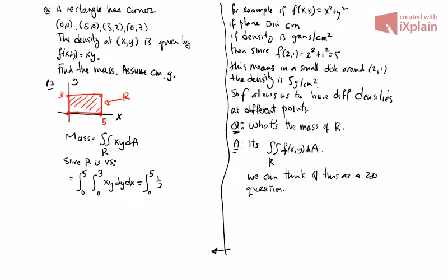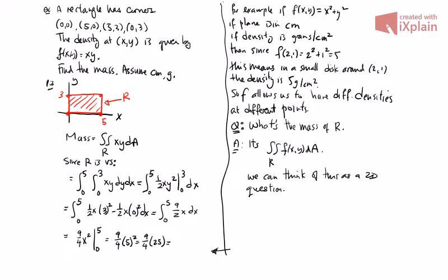0 to 5, integrate with respect to y. Plug in for y, get one half x times 3 squared minus one half x times 0 squared. This is 9 over 2x. Integrate with respect to x, we get 9 fourth x squared. This is 9 fourth times 5 squared, which is 25. So 9 times 25 is 225 over 4, and this would be in grams. That would be our final answer.